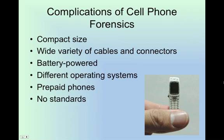There are many complications with cell phones. Unlike desktop and laptop computers, a cell phone is a very small computer. The size of cell phones and their components can sometimes be a problem for the investigator. The huge variety of cables and connectors for hundreds of types of cell phones can be a problem, since investigators would need every type of cable to investigate all different types of phones. Each phone or phone company also has its own different operating system — there are hundreds of them, unlike computers which have only a few main operating systems. Prepaid phones can be an even bigger hassle, as there are no contracts, making it nearly impossible to track a specific user. Criminals think of prepaid phones as disposable phones because they don't leave a trail.